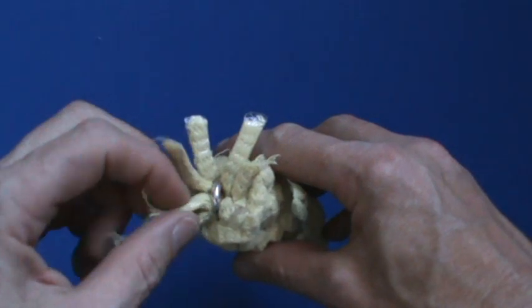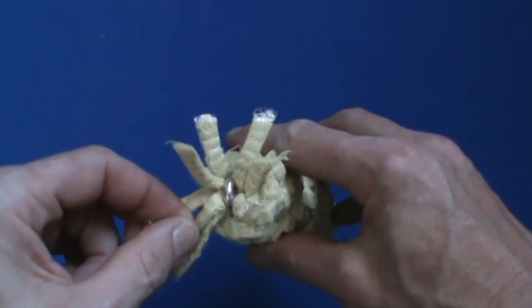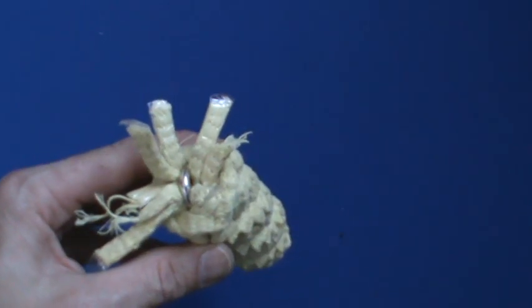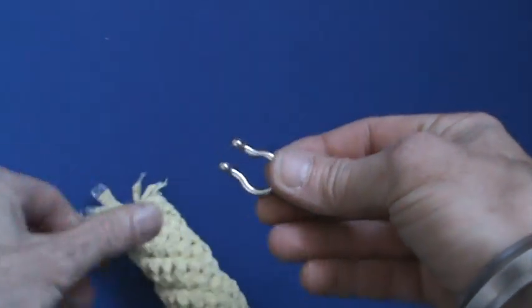So now all I've got to do is trim them back, and then once they're trimmed back, attach this loop.